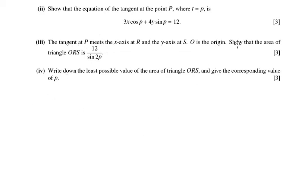Okay, so in part 3 we found that the area of the general triangle ORS can be written as 12 over sine 2P.